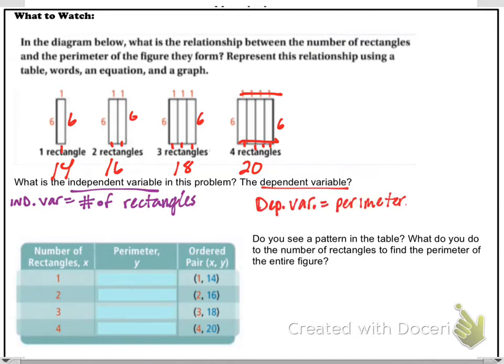I usually think of this in terms of what phrase will make sense when I say something depends on another. So in this case, the perimeter depends on the number of rectangles is what makes sense. So perimeter must be dependent. Independent variable is the number of rectangles. It makes more sense for the number of rectangles to be the inputs, which is our independent, and the output to be the perimeter based on that.